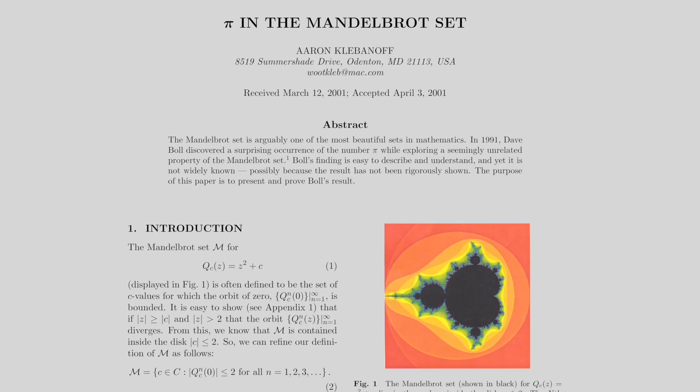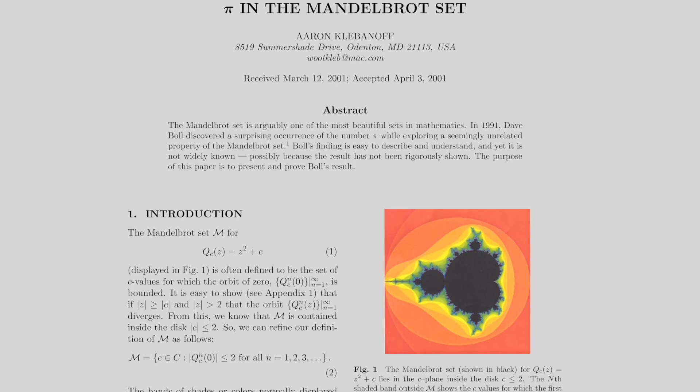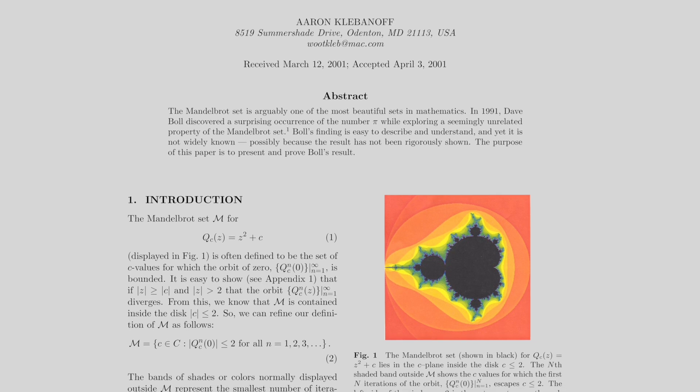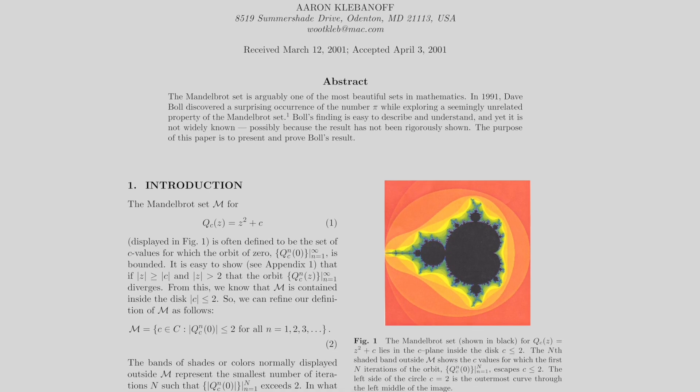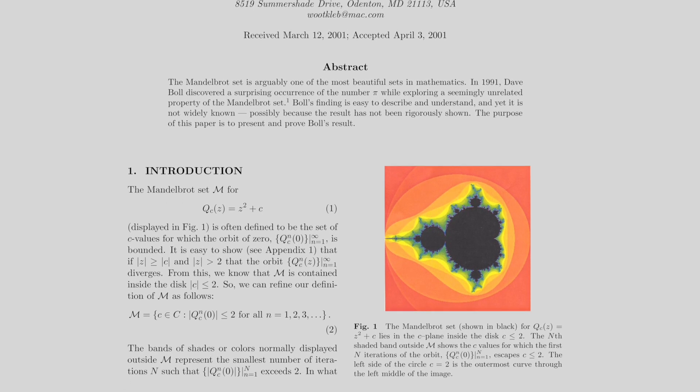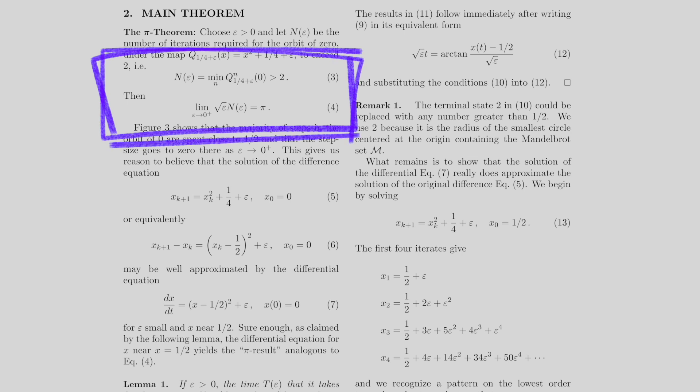Now, demonstrating these connections to pi was actually quite simple, but to prove the connection is much more difficult. It would take another 10 years after David Boll first published his discovery until a formal proof was published by Aaron Klebinoff. Klebinoff focused his proof on the case of 1 half, at the butt of the Mandelbrot set.